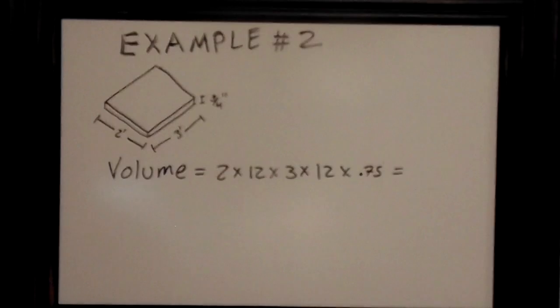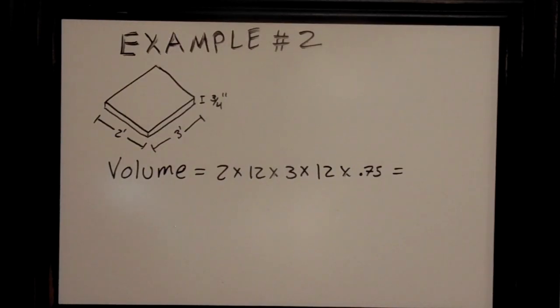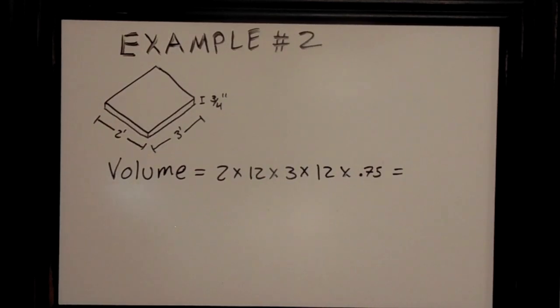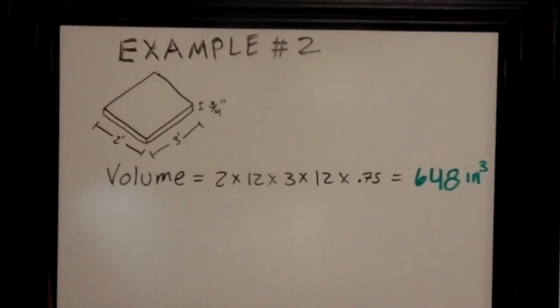For my second example, I'm going to show you how to calculate the board footage of a small piece of wood as opposed to a beam. We solve this one by once again finding the volume, which in this case is 2 feet times 12 inches per foot times 3 feet times 12 inches per foot times the thickness, which is 0.75 inches. That's equal to 648 inches cubed.